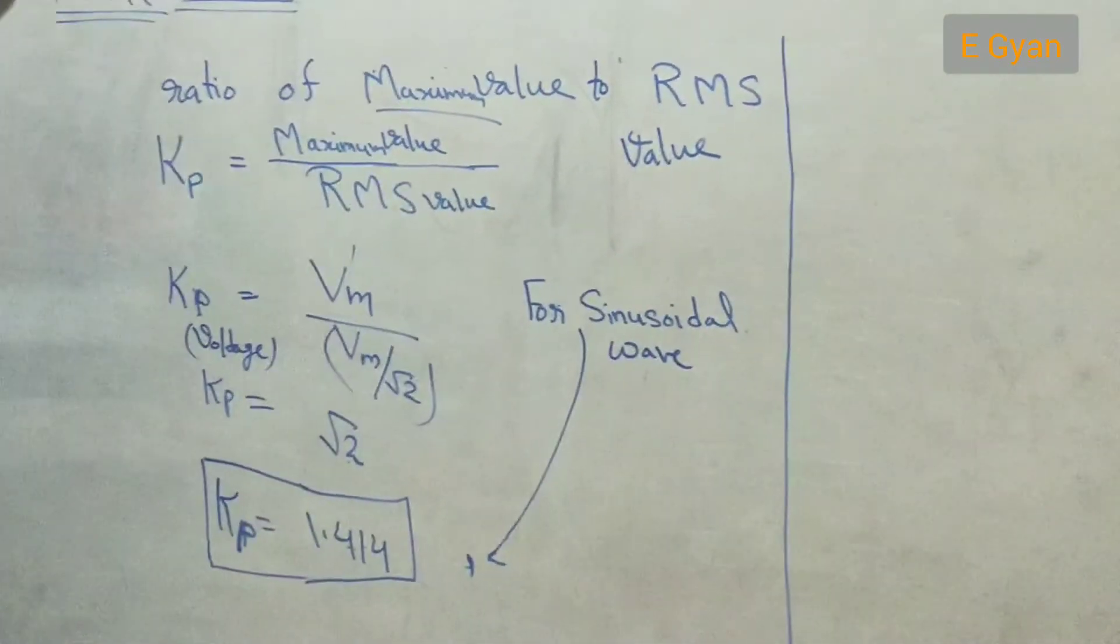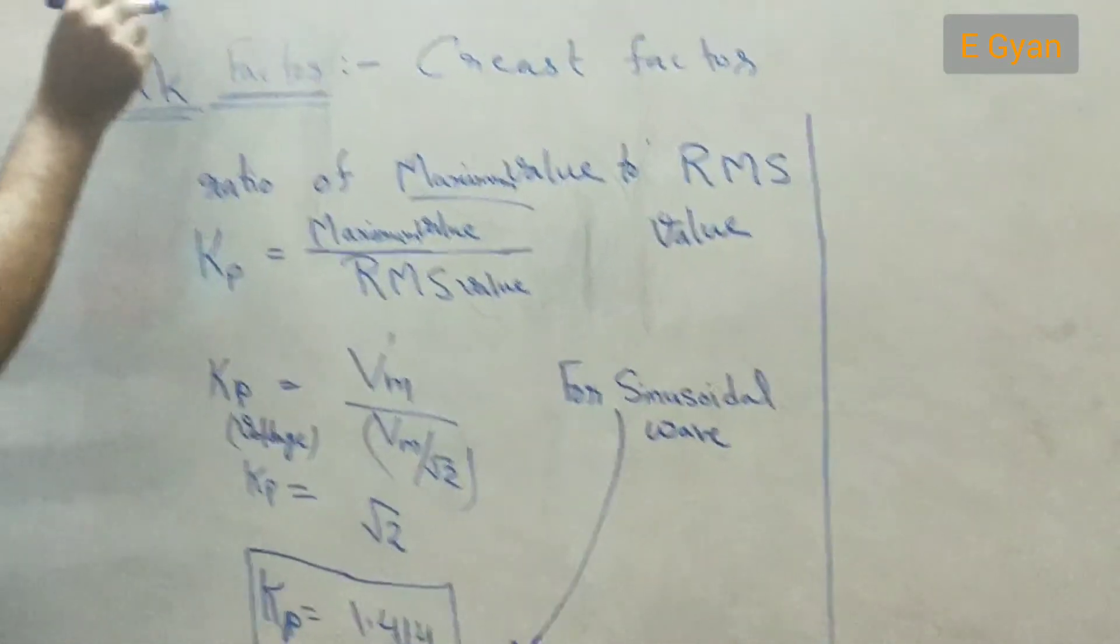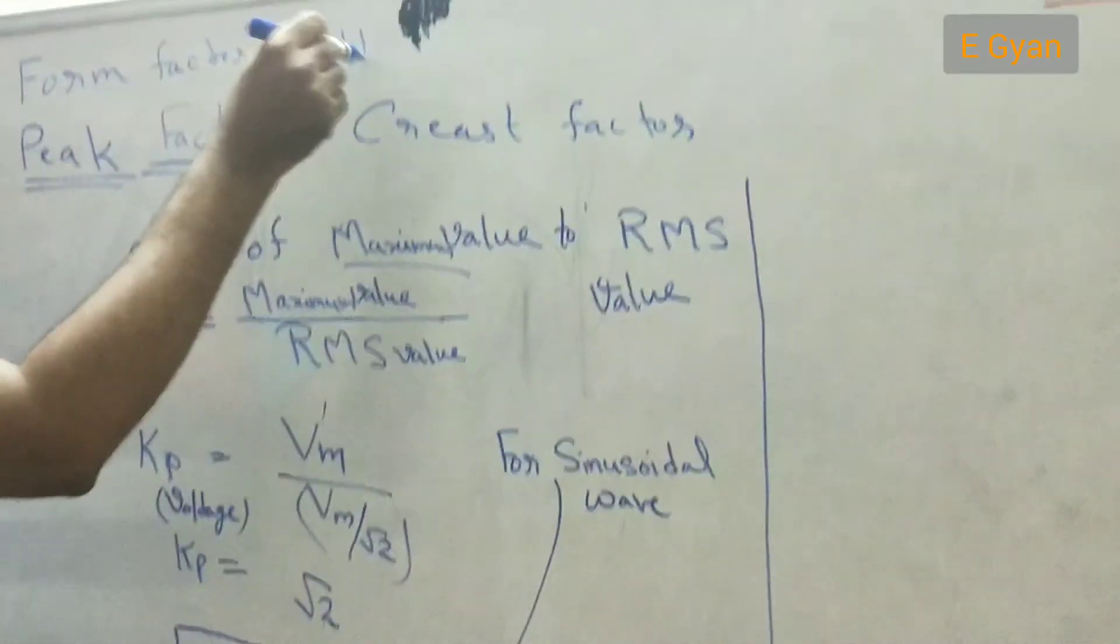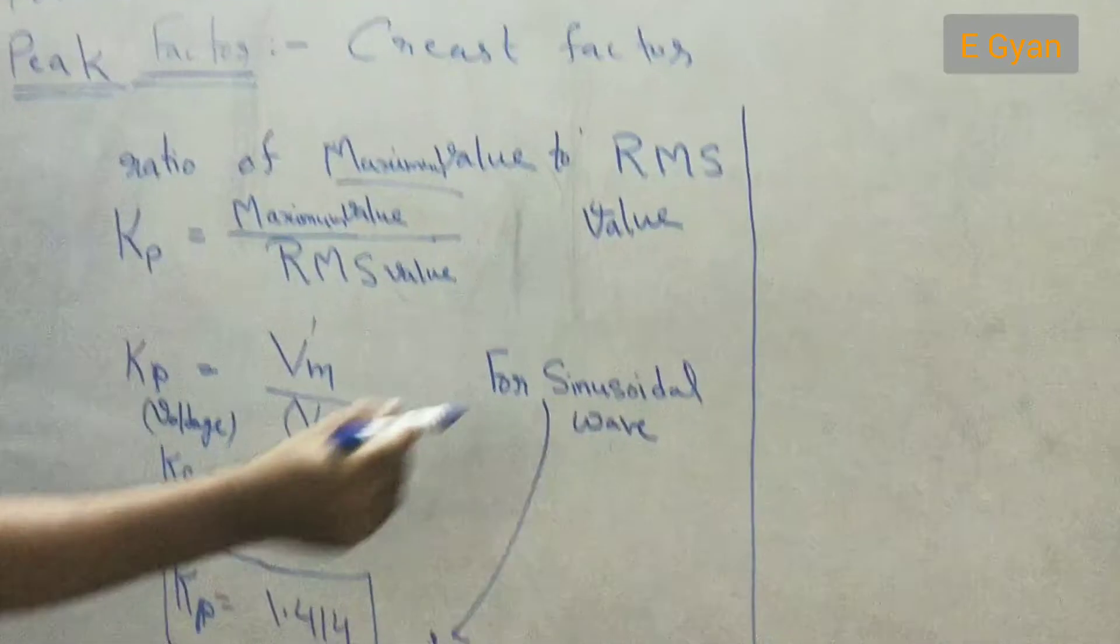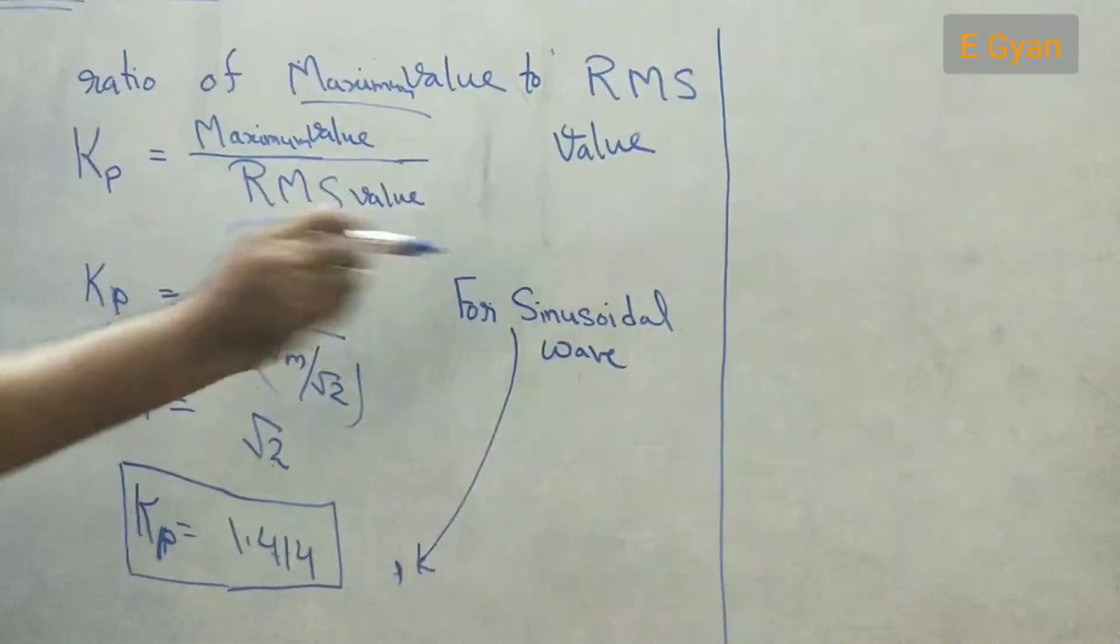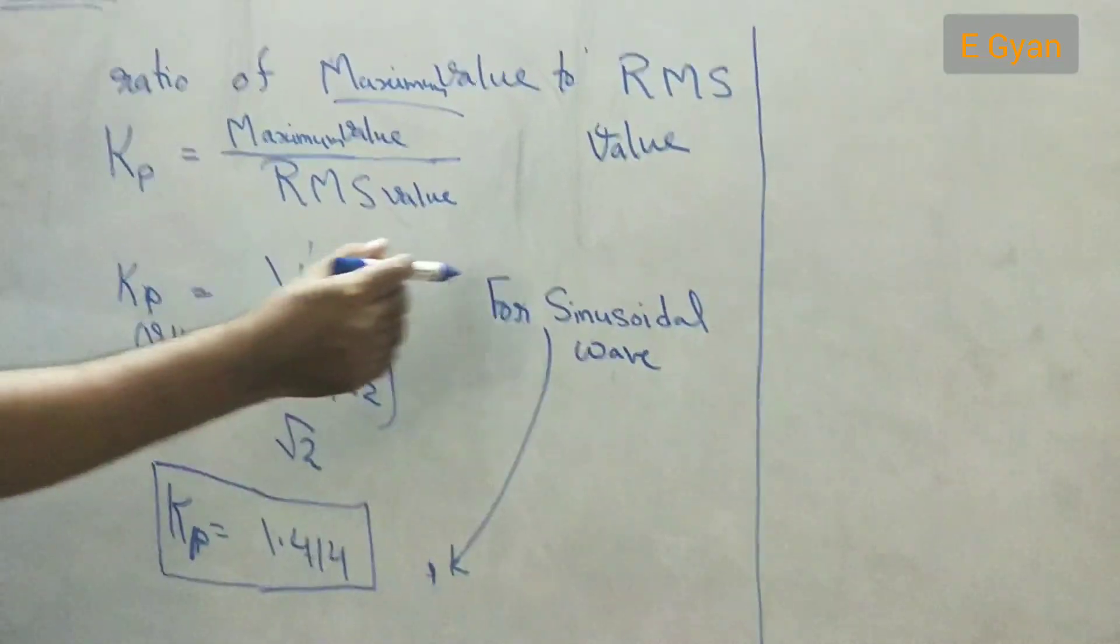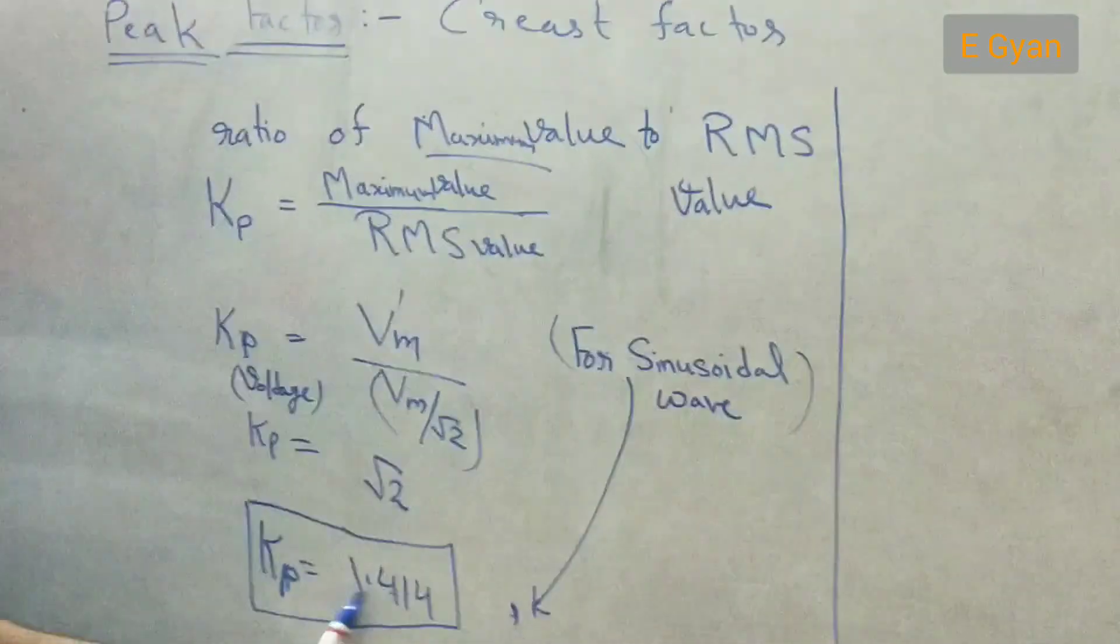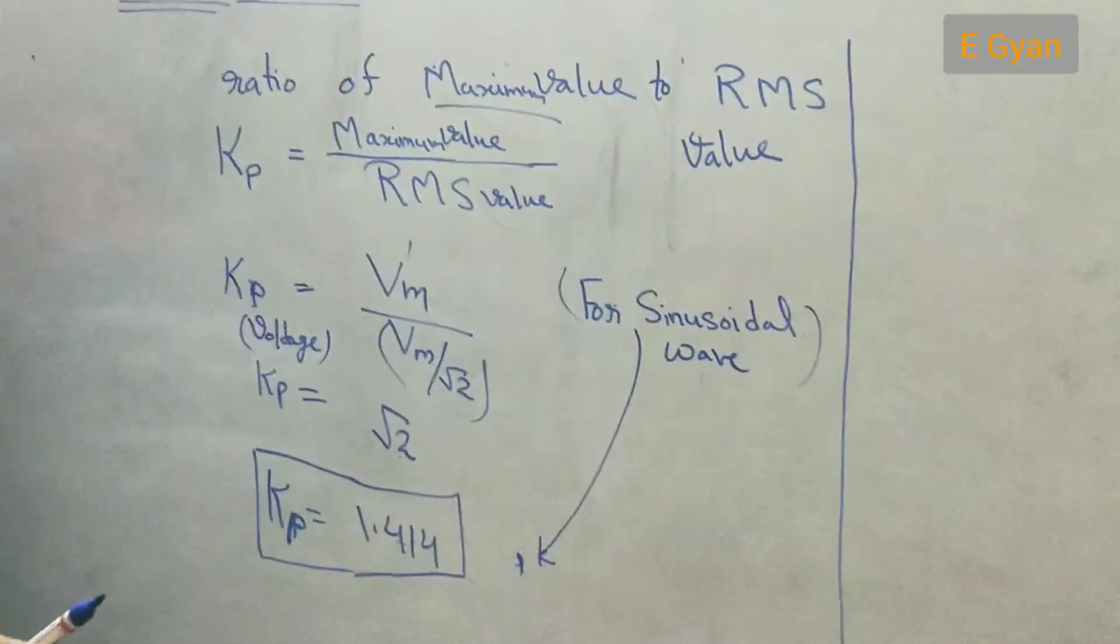So students always remember that form factor for sinusoidal quantities is 1.11 and peak factor for sinusoidal quantities, we are calculating both the quantities for sinusoidal wave only. Remember it is very important that these are sinusoidal waves. The peak factor comes out to be 1.414. Thank you.